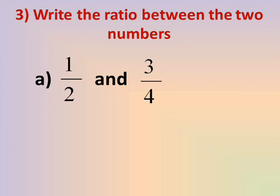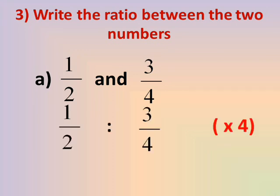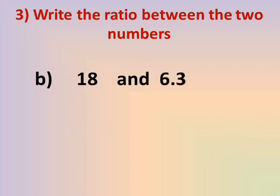Number 3: Write the ratio between the two numbers — one half and three quarters. Here we have two fractions. To convert fractions to whole numbers, we multiply by the greater denominator, which is 4. Multiplying both terms of the ratio by 4: one half × 4 = 2 and three quarters × 4 = 3. So the ratio is 2 to 3.